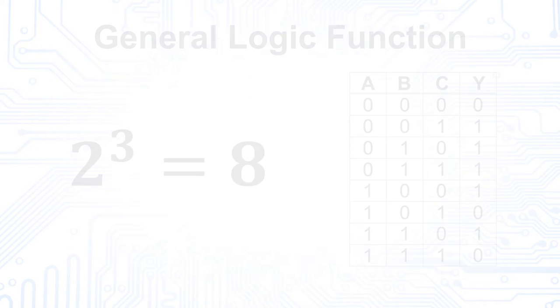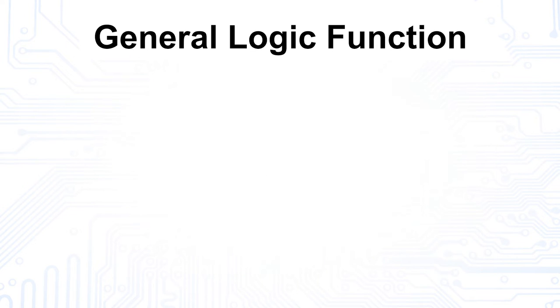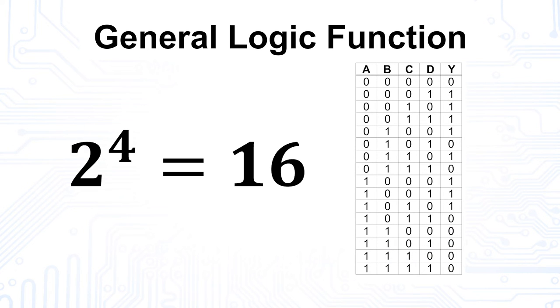Now we know two of the most important logic circuits with two input variables. But what if we want to use three or four input variables? For this, we first need larger truth tables. Three input variables result in a total of 2 to the power of 3 possible output states. Four variables therefore result in 16 output states, which is 2 to the power of 4.